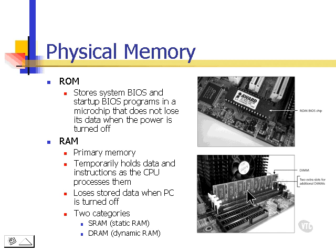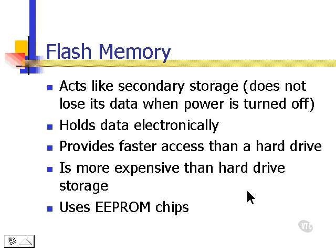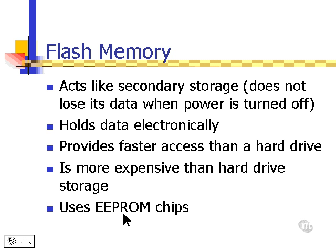There's also a faster type of memory called flash memory. Flash memory acts like secondary storage — it doesn't lose its data when power is turned off; it holds data electronically. It provides very fast access, but it's very expensive. Flash memory uses what's called EEPROM chips — electronically erasable, programmable, read-only memory.